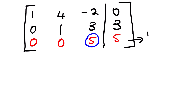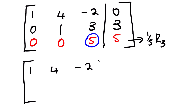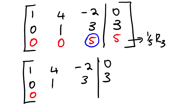Now we multiply row 3 by 1/5. Everything else remains the same: 1, 4, negative 2, 0; 0, 1, 3, 3. Then 0 times 1/5 is 0, and 1/5 times 5 is 1. So row 3's leading element becomes 1, and the augmented value is also 1.